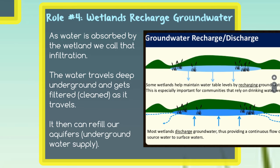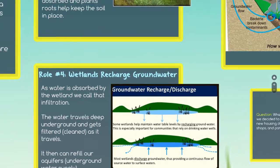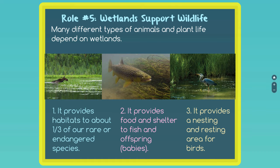In this picture, we have wetlands recharging — the arrows show water going underground, getting filtered, and being accessible later. Discharge is when wetlands are so full that water can't go underground and instead flows up and out on the surface. The fifth role that wetlands play is wetlands support wildlife. There are a lot of different animals that live and rely on wetlands: it provides habitat to almost one third of rare and endangered species, provides food and shelter for fish and their offspring, and also provides nesting and resting areas for birds.